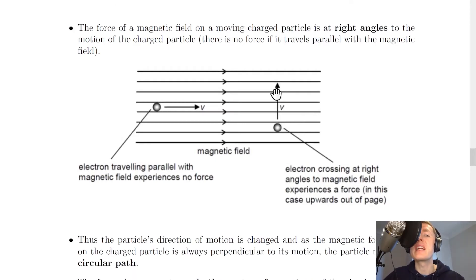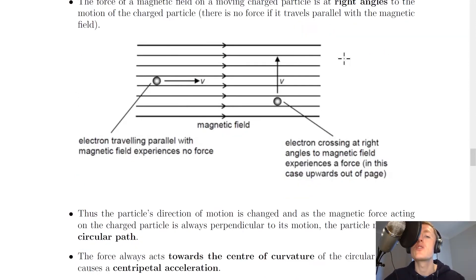The force of a magnetic field on a moving charged particle is at right angles to the motion of the charged particle, and there is no force if it travels parallel with the magnetic field. So in this diagram, we've got a magnetic field going to the right. If we've got an electron travelling parallel with the magnetic field, then it will experience no force, whereas if the electron is crossing at right angles to the magnetic field, then it experiences a force, in this case upwards out of the page. And you can determine this direction using the right hand rule.